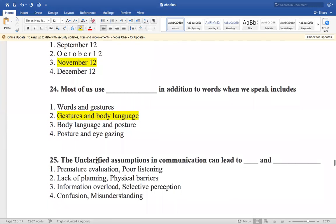So unclarified assumptions in communication can lead to dash and dash. So if our communication is unclarified, then what happens when we communicate with the person, there will be confusion and misunderstanding. So option number four is the right answer. That's why we always keep feedback in communication.